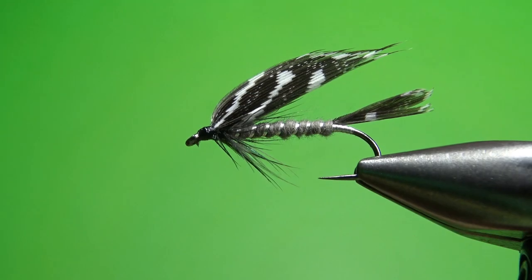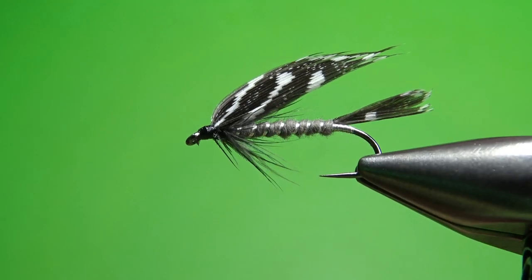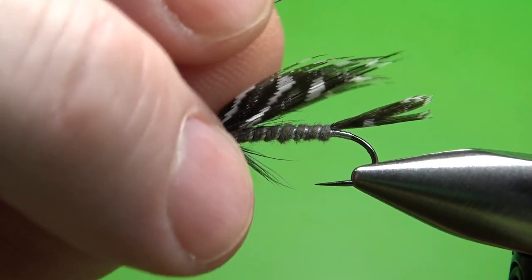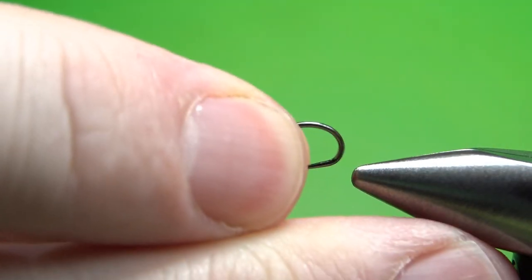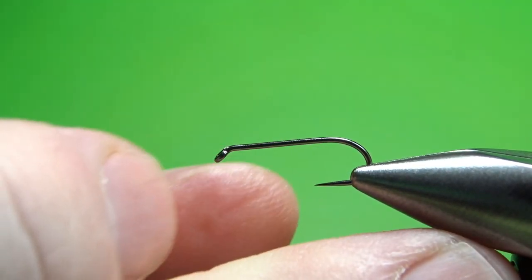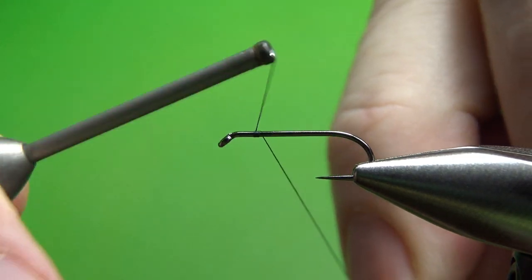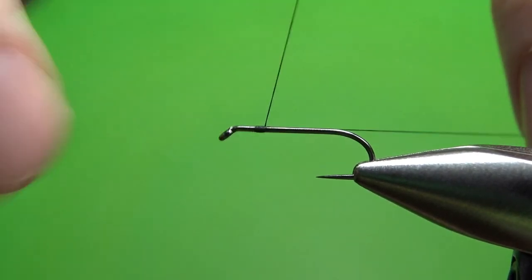There it is, Mary Orvis Marbury's Beauty. The only thing real unique about this is kind of that guinea wing and tail. I'm going to tie this on a size 12, it's a 1x long standard wet fly hook, 1x strong. And I'm using 12 aught thread. You could use a 70 denier or 8 aught for sure. Go ahead and lay a base down all the way to the start of the bend.